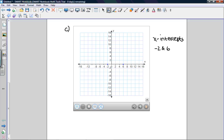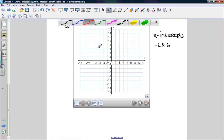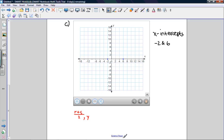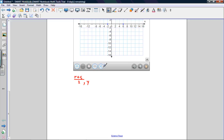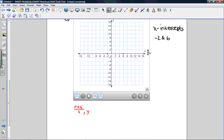We need to find the vertex. We have a formula for that. Our R and S are our two x-intercepts, which are negative 2 and 6.